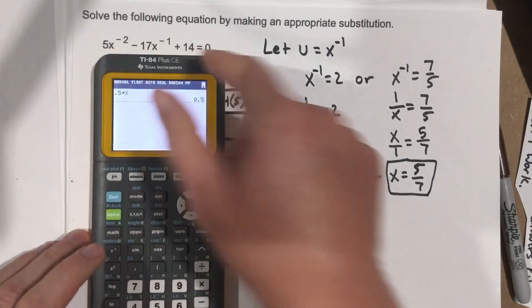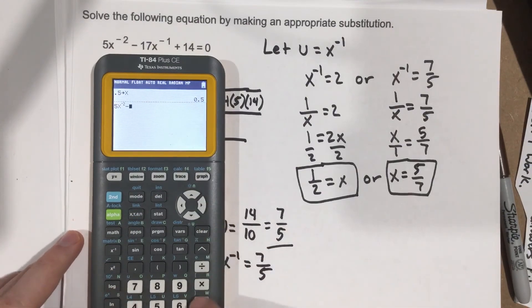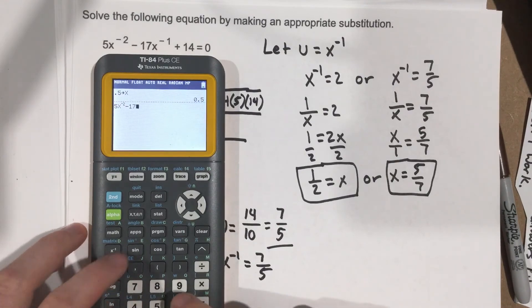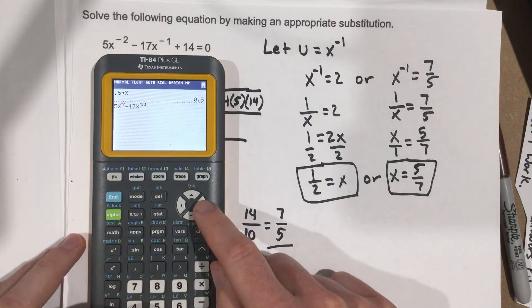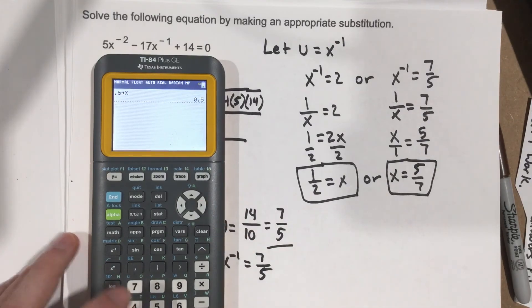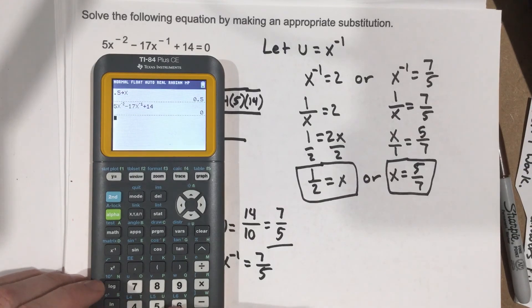Then we're just going to type in the equation. So 5x to the negative 2 minus 17x to the negative 1 plus 14, 0. That's a solution.